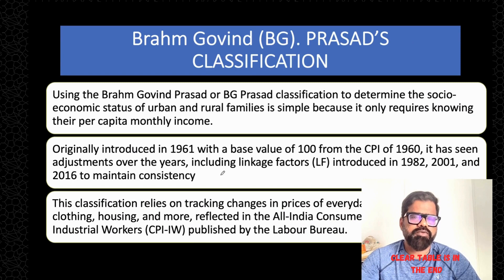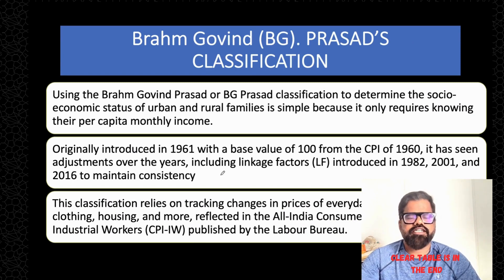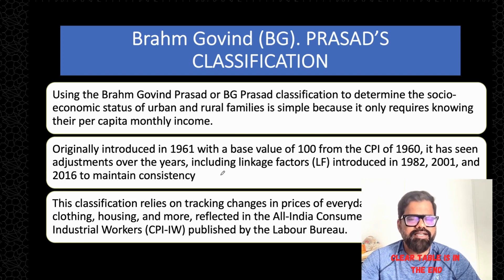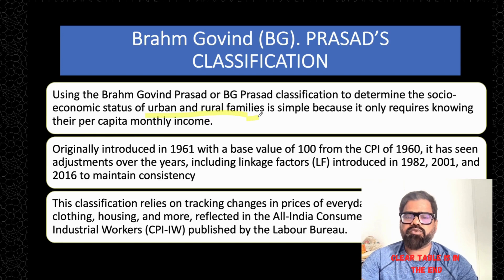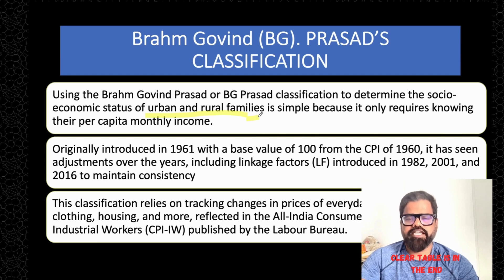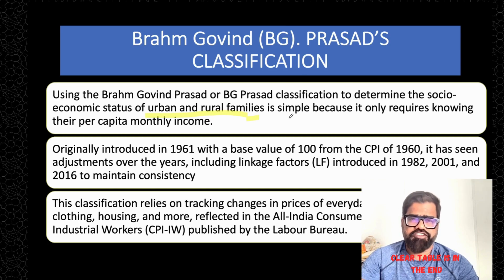BJ Prasad classification — the full form is Brahma Govind Prasad classification. This classification started in 1961 and it can be used in both urban and rural family areas. It is very simple — it is based on per capita monthly income.